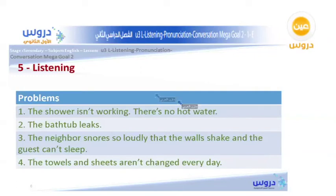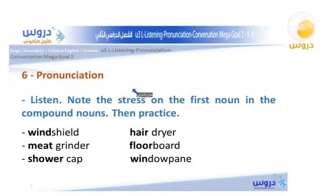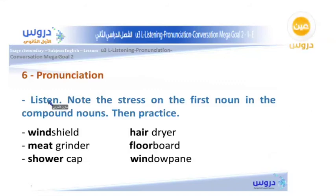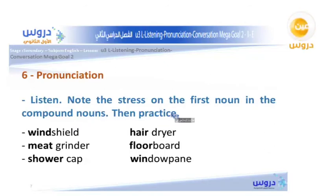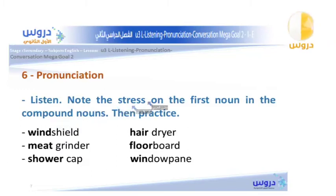Now we move to the pronunciation section. We need to concentrate on stress in compound nouns — words made of more than one noun, like 'windshield.' We need to know where to place the stress, specifically on the first noun, so we can pronounce them correctly. The first example is 'WINDshield.'